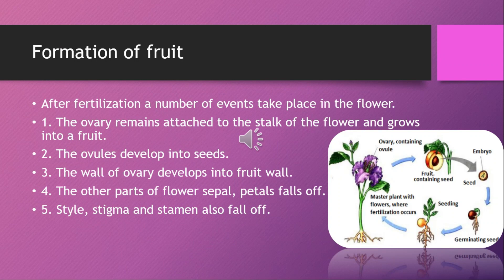After fertilization, a number of events take place in the flower. The ovary remains attached to the stalk of the flower and grows into a fruit. The ovules in the ovary develop into seeds. The wall of the ovary develops into the fruit wall. The other parts of the flower — like sepals, petals, style, stigma, and stamens — also fall off.